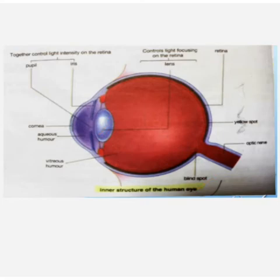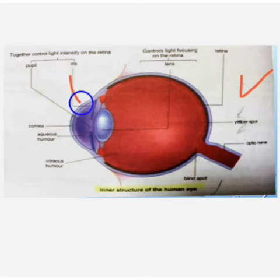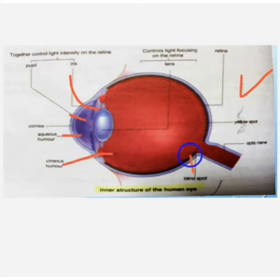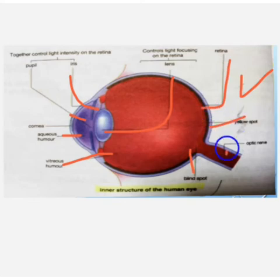Next we have the inner structure of the human eye. This is a blind spot — I will explain it in detail. This is the lens, this is the retina, this is the yellow spot. These are all parts of the eye.